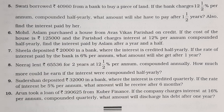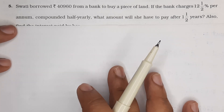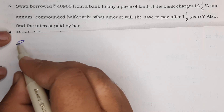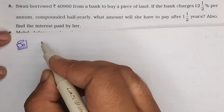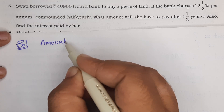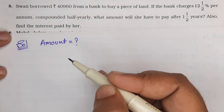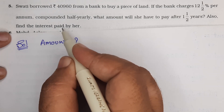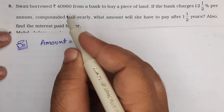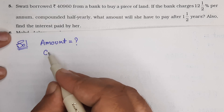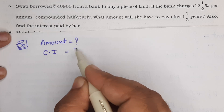आपको क्या बताना है? सबसे पहले यह देख लिए। तो सबसे पहले हमें बताना है — what amount? तो solution में आपको क्या calculate करना है? Amount calculate करना है। और also find the interest — तो bank का compound interest है, आपको compound interest बताना है कि कितना है।